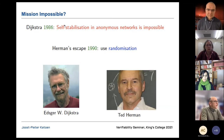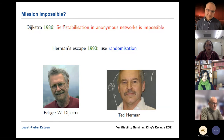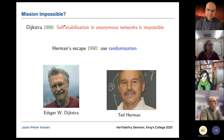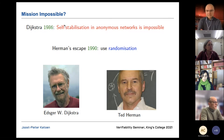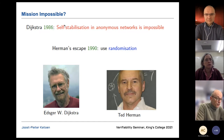There's a famous paper by Dijkstra in the 80s saying that self-stabilization in anonymous networks is impossible — meaning there is no deterministic solution for an algorithm that doesn't use node identities. Dijkstra proposed a solution, but it used a specific process called a leader. Then in the 90s, Ted Hermann came up with a randomized solution, which is the algorithm I'm going to explain.